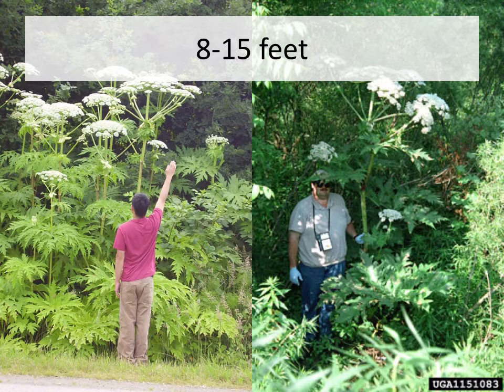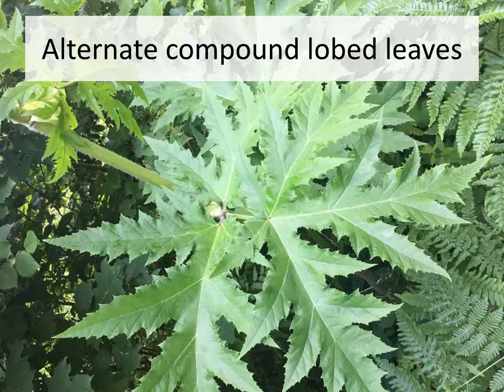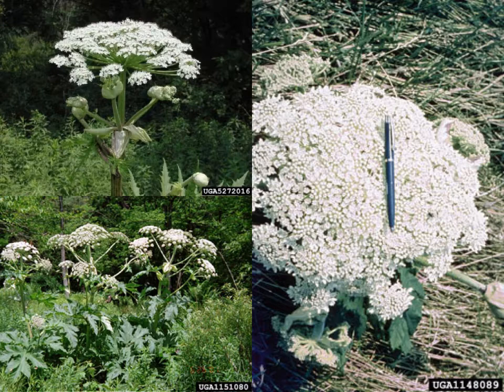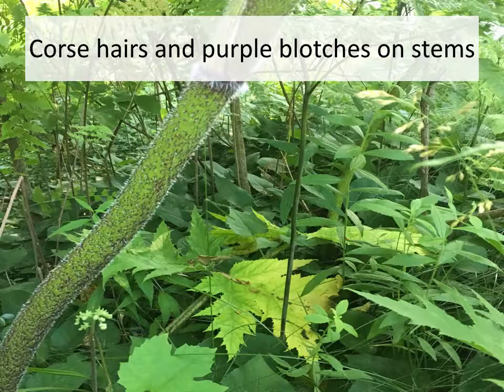Giant hogweed is called giant for a reason — it can reach heights of 15 feet tall, and you can see some grown men standing next to the plant. Its leaves alternate on the stem and they are both compound and lobed. The flower head is considered a compound umbel, meaning these little groups of flowers all come together to form a big massive group of flowers with an umbrella shape.